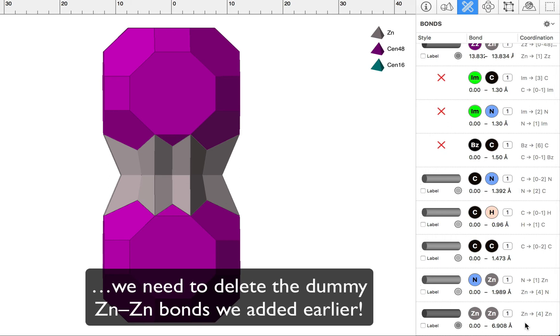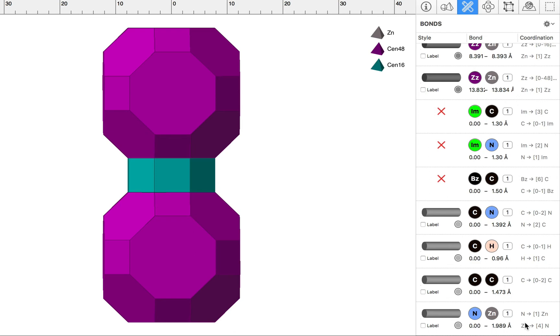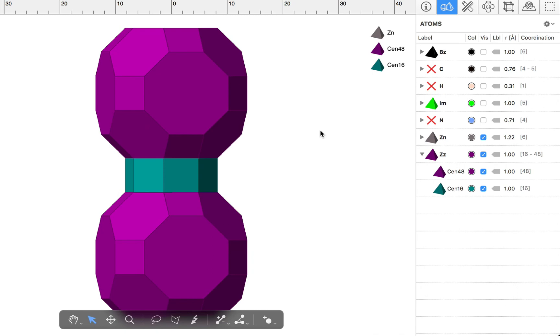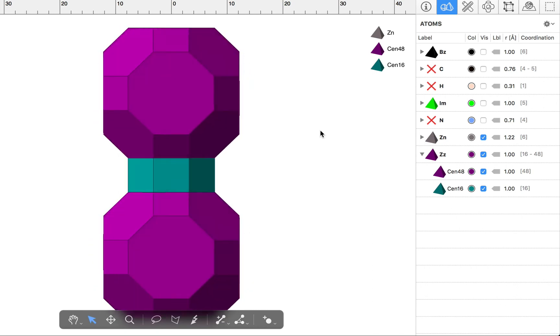Here they are at the bottom, in the bottom row. Select that row and press delete. And those bonds are now gone. And we can see that we have got the two types of polyhedra, the 48-vertex and the 16-vertex site.